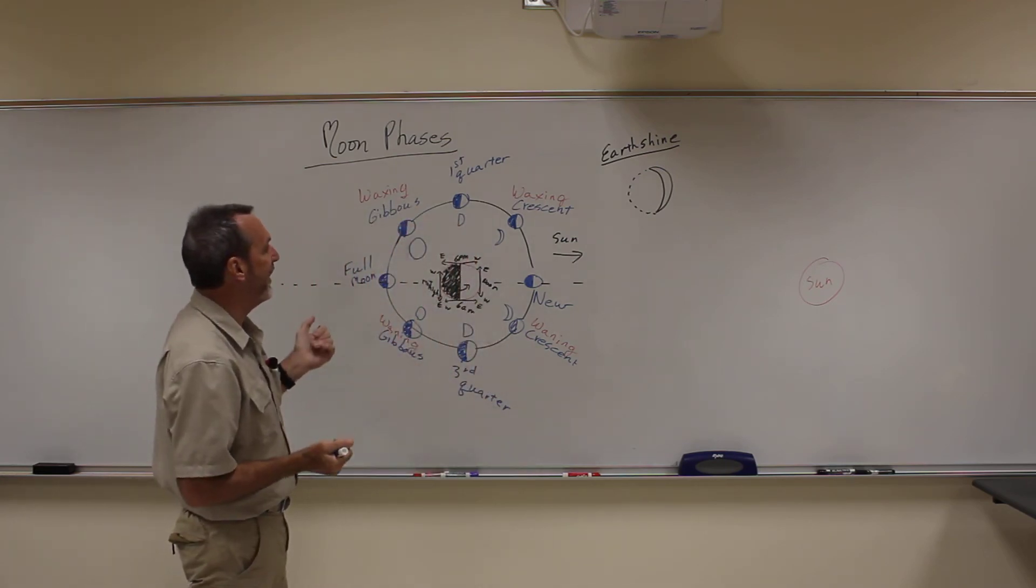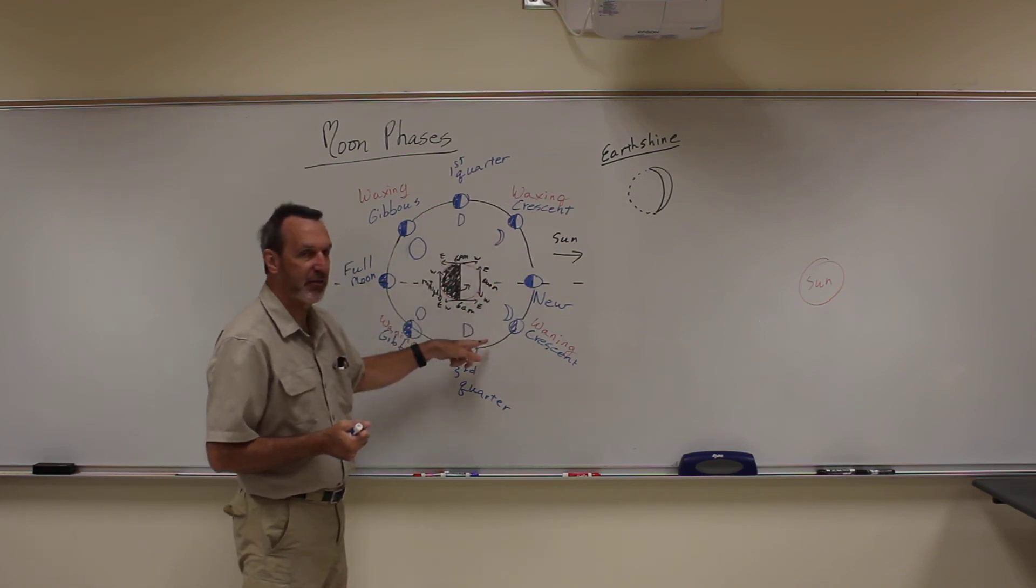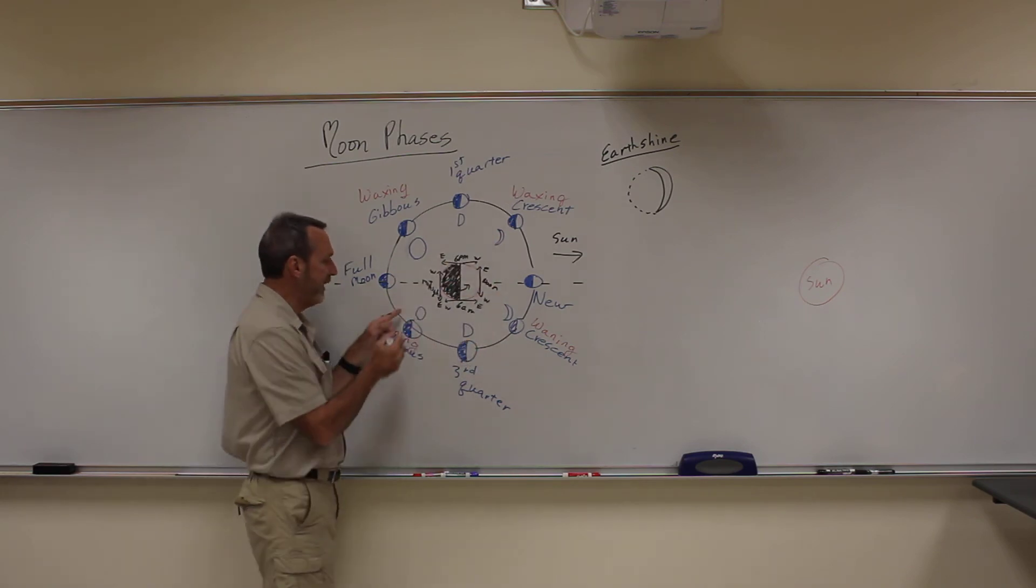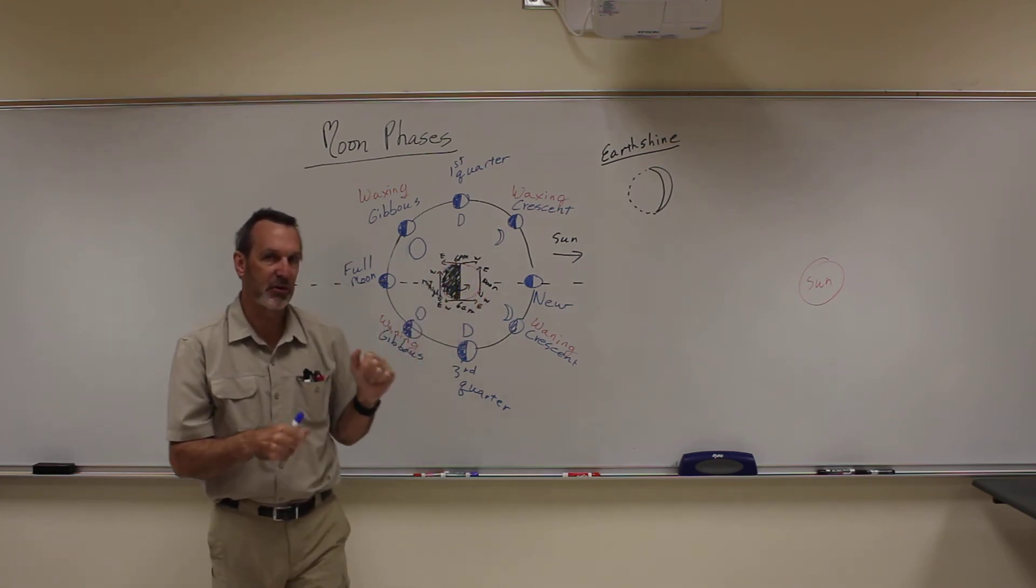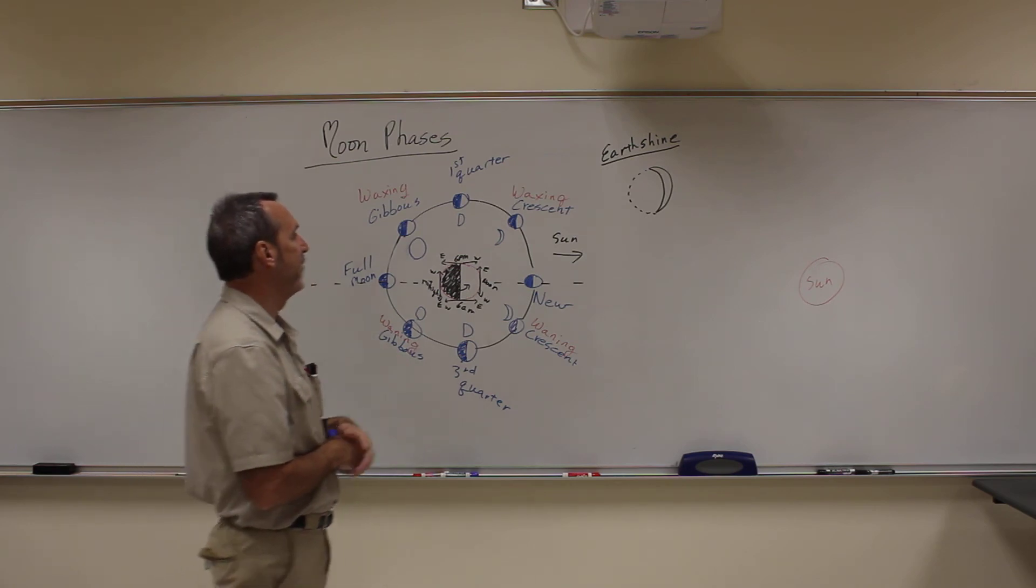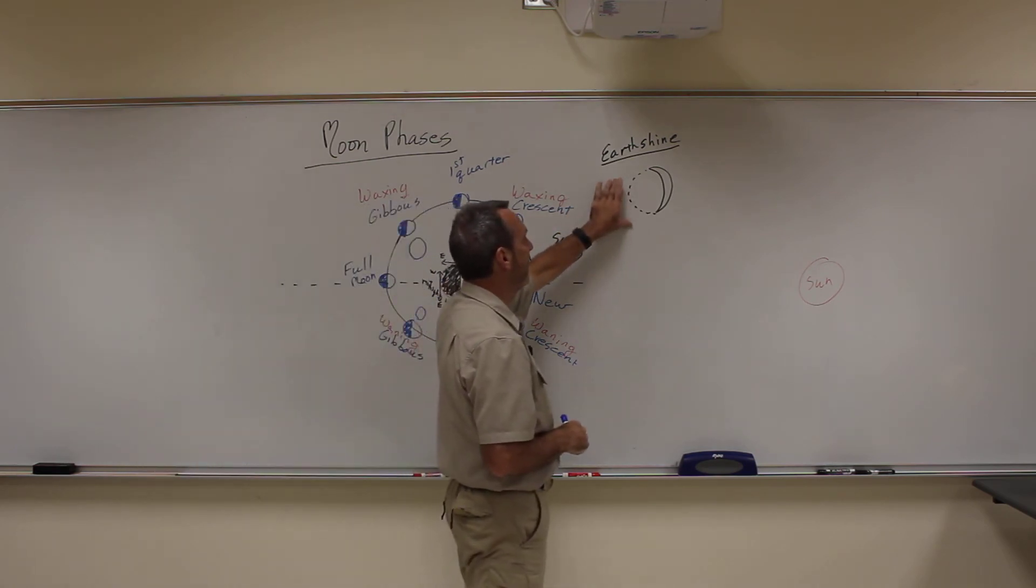And we call that Earth shine. You only see it when it's nearly a crescent phase. You don't see it over here because when you're over here in a gibbous phase, the Earth is only a crescent phase. So it doesn't have as much light to light up the dark side so you can't see that. And so we call that special thing Earth shine.